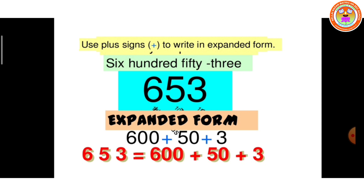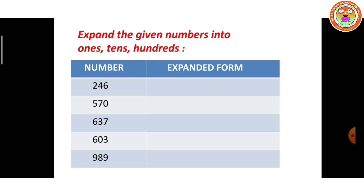653 — shall we expand this? 6 in the 100s place is 600, 5 in the 10s place is 50, plus 3 in the 1s place is 3. So what is the expanded form? 600 plus 50 plus 3.